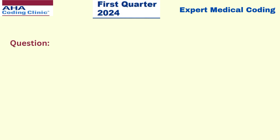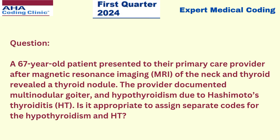Now let us see the scenario. A 67-year-old patient presented to their primary care provider after MRI of the neck and thyroid revealed a thyroid nodule. The provider documented multinodular goiter and hypothyroidism due to Hashimoto's thyroiditis.